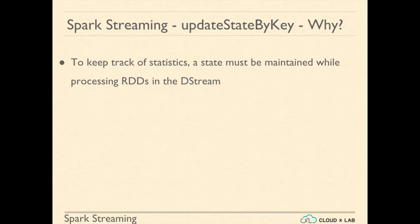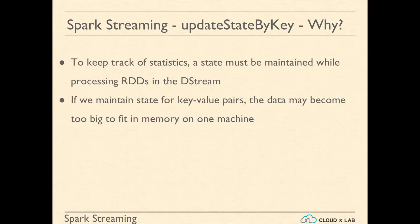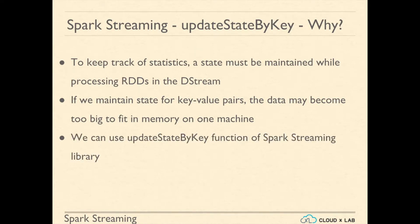To keep track of statistics, a state must be maintained while processing RDD in the DStream. If we maintain state for key-value pairs, then the data may become too big to fit in the memory on one machine. We can keep track of state easily with the UpdateStateByKey function of the Spark Streaming library.